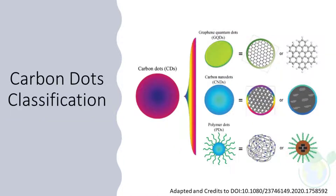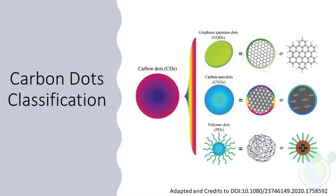Currently, researchers classify carbon dots based on the analysis of their formation mechanism, micro- and nanostructure, and property features, and describe their synthetic methods and optical properties including strong absorption, photoluminescence, and phosphorescence. The three classes of carbon dots are: firstly, graphene quantum dots consisting of one to two or three graphene layers; second, carbon nanodots possessing graphite or amorphous-like structure; and thirdly, polymer dots consisting of aggregated linear polymers or polymer chains around or inside a carbon core.